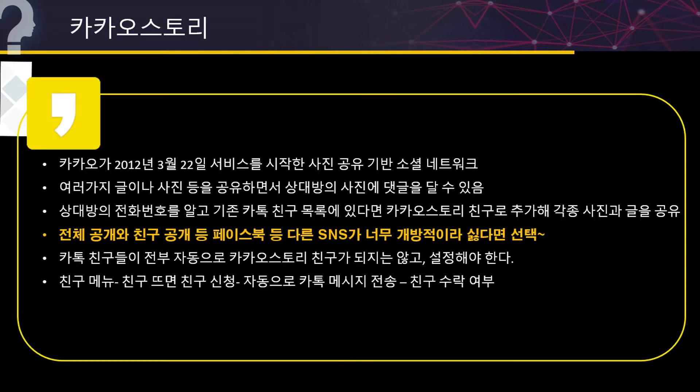세 번째, 카카오스토리입니다. 카카오가 2012년 3월 22일 서비스를 시작한 것으로 사진 공유 기반 소셜네트워크이고요. 여러 가지 글이나 사진 등을 공유하면서 상대방의 사진에 댓글을 달 수 있고요. 상대방의 전화번호를 알고 기존 카톡 친구 목록이 있다면 카카오스토리 친구를 추가해서 각종 사진과 글을 공유할 수 있습니다. 카톡 친구들이 전부 자동으로 카카오스토리 친구가 되지는 않고 친구로 수락해야만 됩니다.